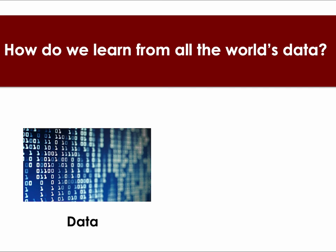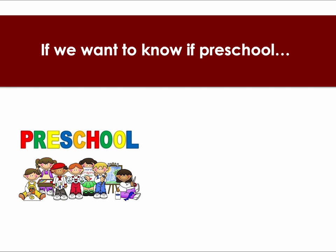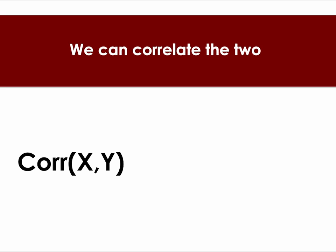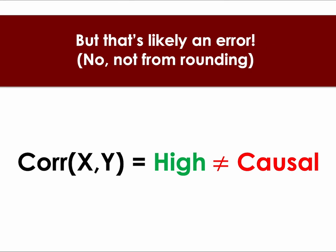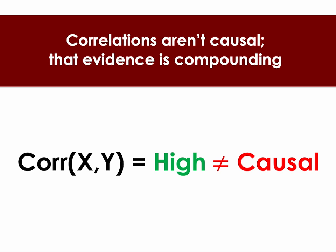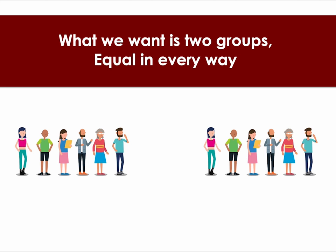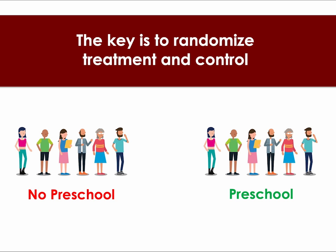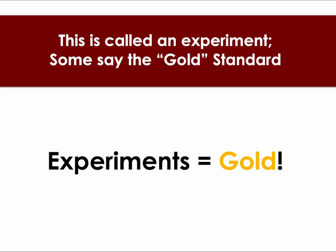How do we learn from all the world's data — like what causes what, or estimating beta? If we want to know if preschool affects your shot at college, our task is not so easy. You have to acknowledge we can correlate the two with results that are resounding, but that's likely an error — correlations aren't causal, that evidence is compounding — the problems of variables that might be confounding. What we want is two groups equal in every way, except one gets preschool or any treatment we say. The key is to randomize treatment and control, so confounds are balanced — at least that's our goal.